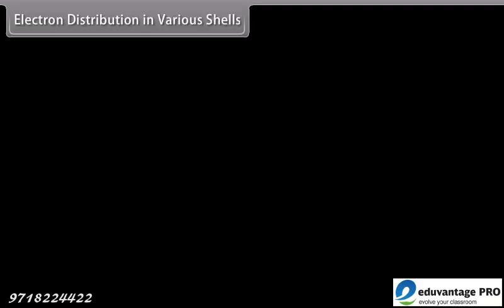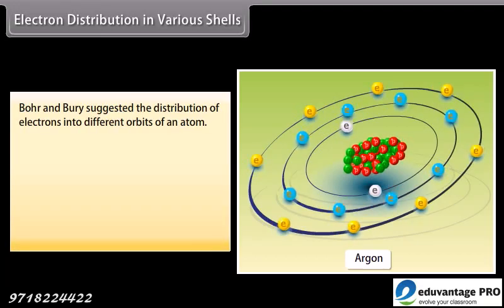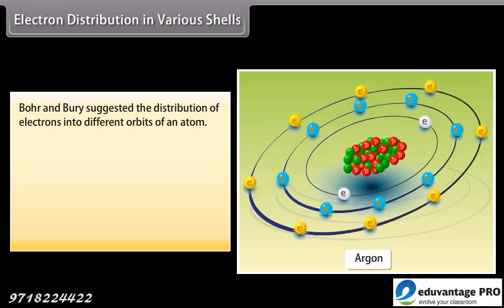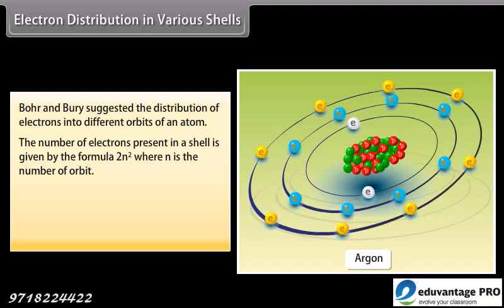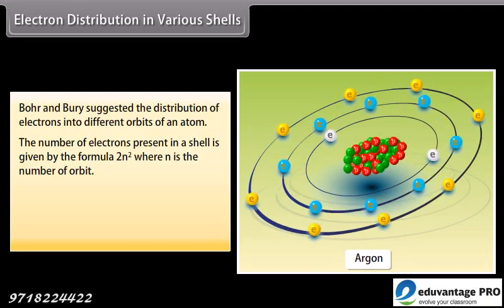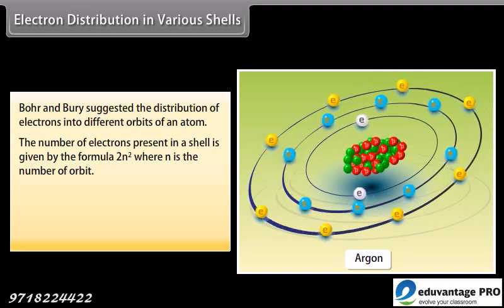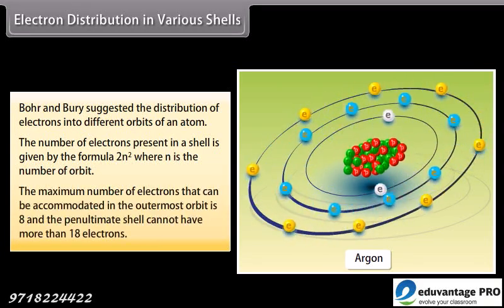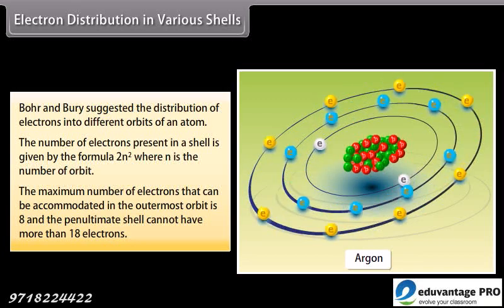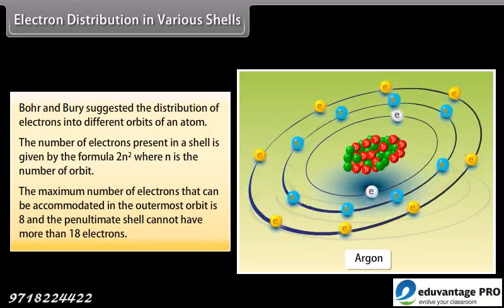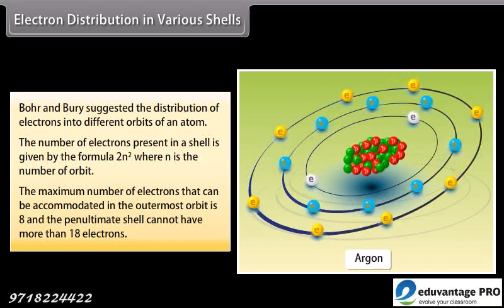Electron distribution in various shells. Bohr and Burry suggested the distribution of electrons into different orbits of an atom. The number of electrons present in a shell is given by the formula 2N squared, where N is the number of orbit. The maximum number of electrons that can be accommodated in the outermost orbit is 8, and the penultimate shell cannot have more than 18 electrons.